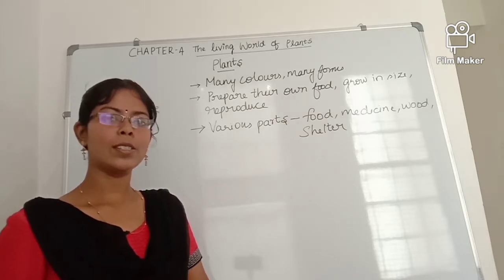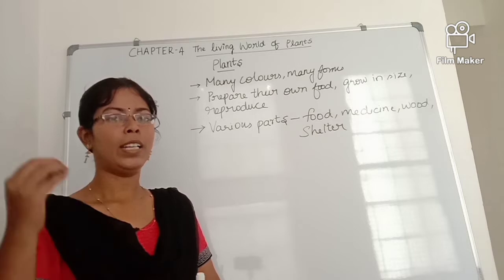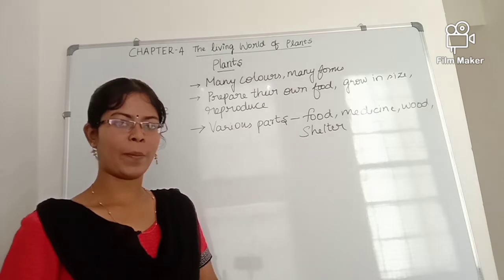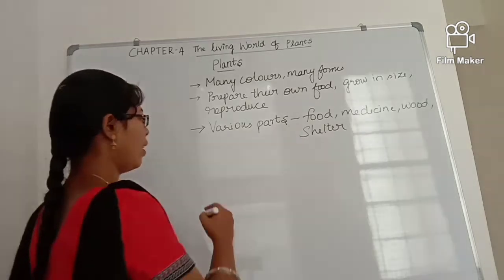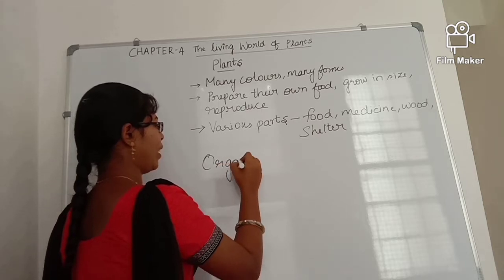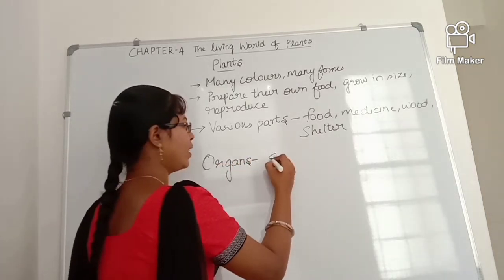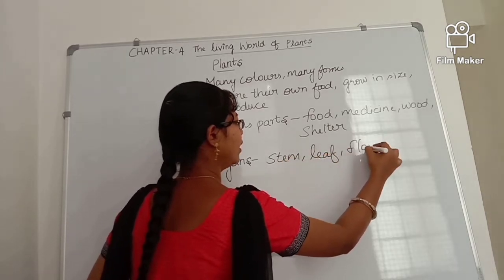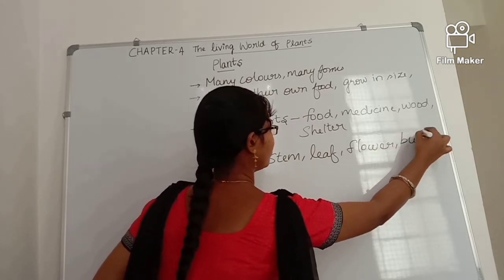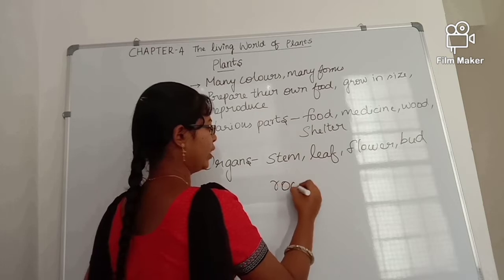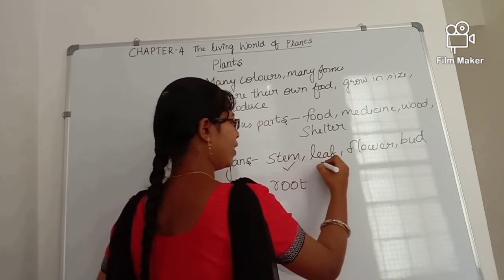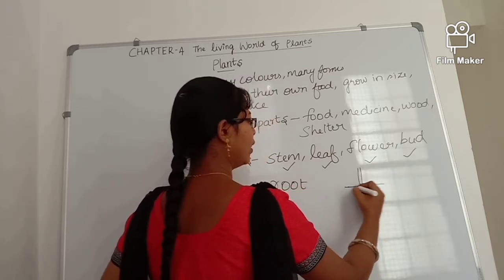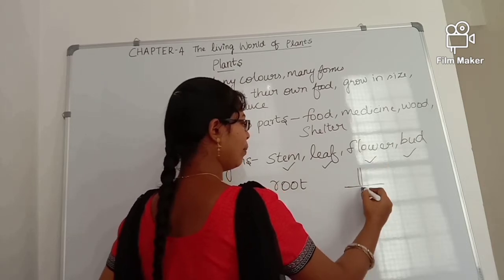Do you know what are the organs of plants? Just as we have hands, legs, and heads, plants also have organs. The organs of a plant are stem, leaf, flower, bud, and root. Leaf, stem, flower, and bud can be seen above the soil. Root can be seen below the soil.